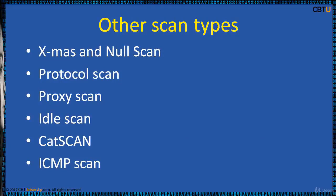There are many other scan types that nmap supports. XMAS scan sends packets with FIN, URG, and PUSH flags turned on — like a Christmas tree. NULL scan sends a packet with no TCP flags set. Protocol scan determines what IP protocols (like TCP, UDP, etc.) are enabled on the target. Proxy scan is done to know the proxy's IP address. Idle scan performs scanning without revealing one's identity. CAT scan checks ports for erroneous packets.